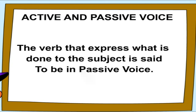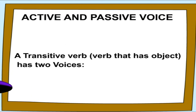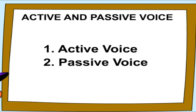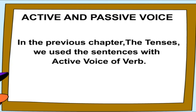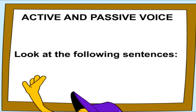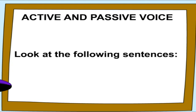A transitive verb — a verb that has an object — has two voices: active voice and passive voice. In the previous chapter on tenses, we used sentences with active voice verbs. Look at the following sentences.